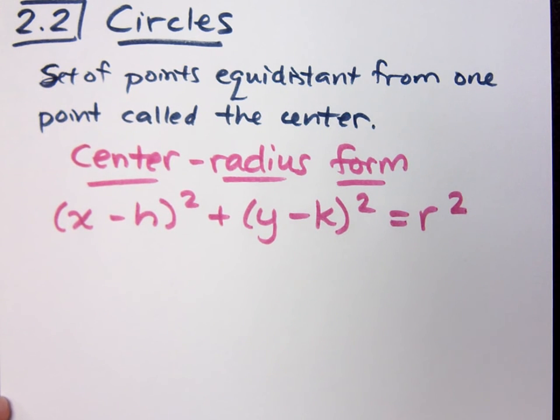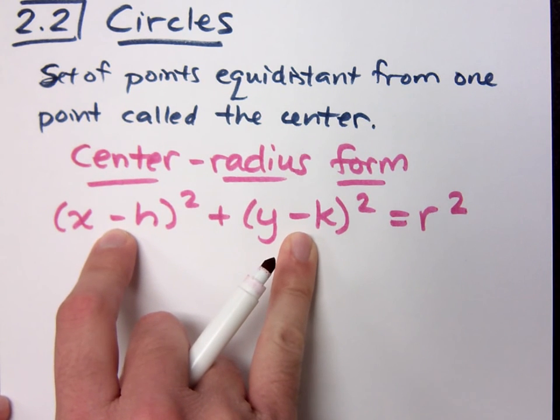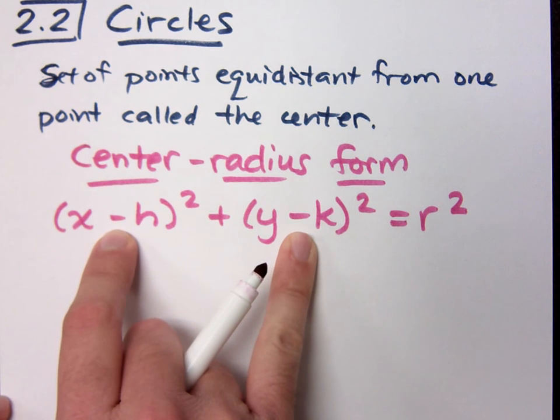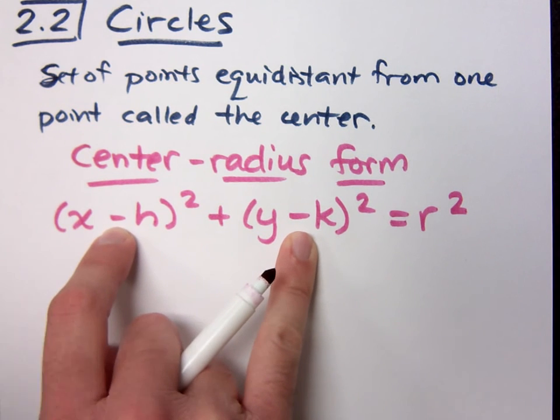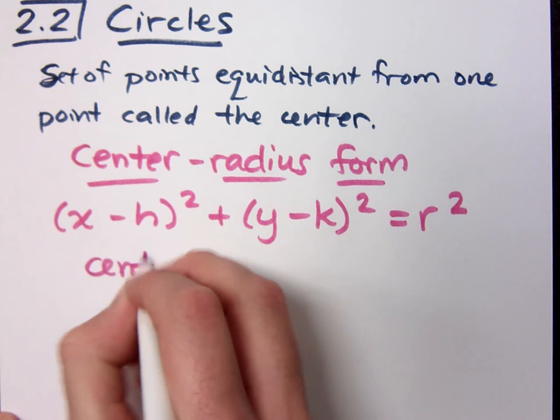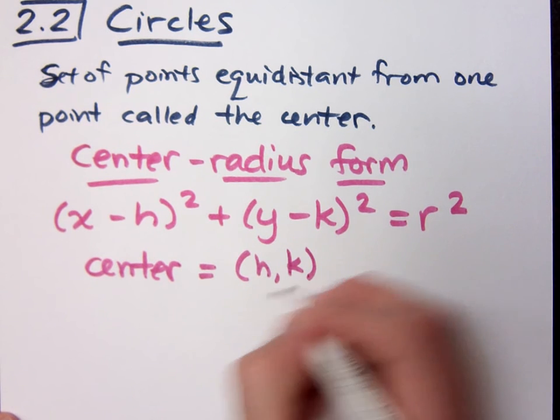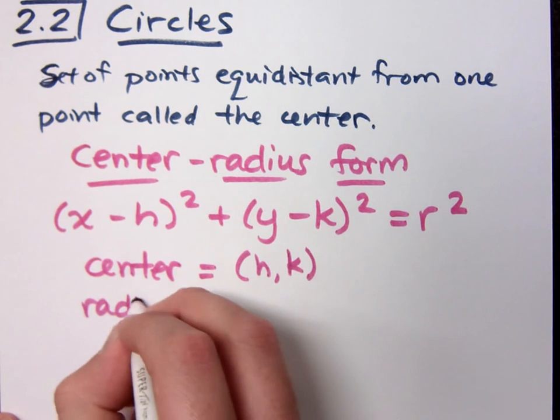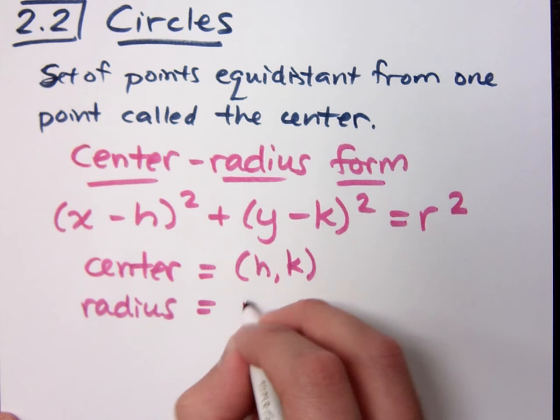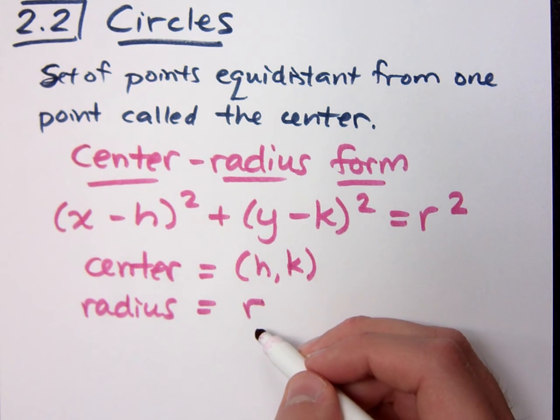Now, I warned you about forms back in section 0.3 about the way they're set up. Notice how this form is set up with minuses in here. That means that when you are out to identify the h and k, you do the opposite of what you see. From this form, the center is given by the coordinates (h, k), and your radius is equal to r. Please note that this formula has r², but your radius is just r.